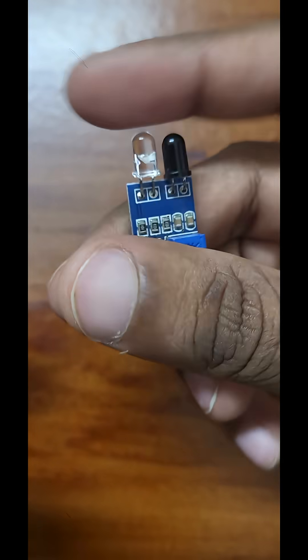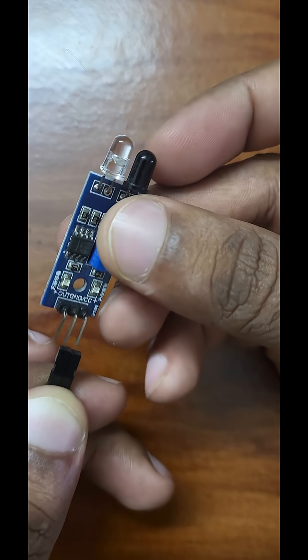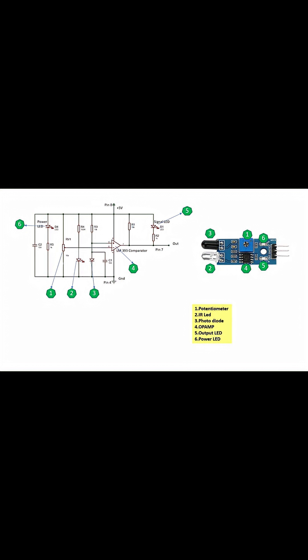The photodiode output is fed to a comparator. The comparator checks if the signal is above or below a reference voltage, set by a potentiometer. This reference voltage doesn't just compare, it controls sensitivity.